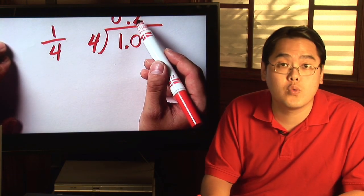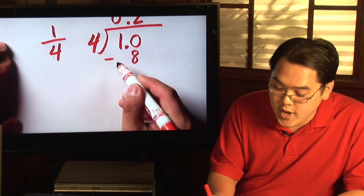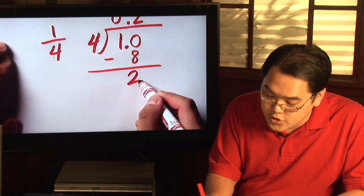Then, just do like you would in long division. Two times four is going to give you eight. Do the subtraction. Don't worry about the decimal for right now. Ten minus eight is going to give you two.